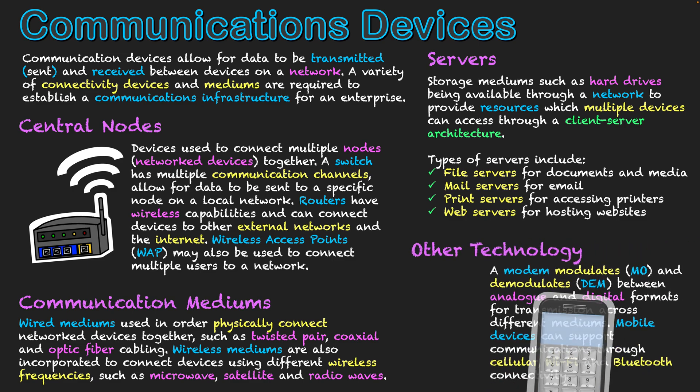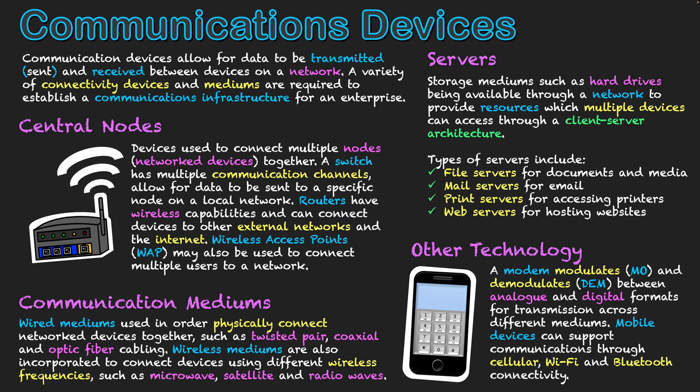The final area is other technology often used for communications, such as a modem, which is used to modulate and demodulate analog and digital formats when sending down different types of mediums. The other one is the mobile phone. Mobile phones can support a variety of different transmission mediums — they have cellular technology, Wi-Fi technology, and Bluetooth technology all built in, so they can communicate on a variety of different frequencies and networks. Your mobile phone can also be used to hotspot and provide internet access by connecting with its provider to exchange data on public networks.